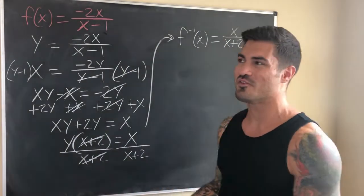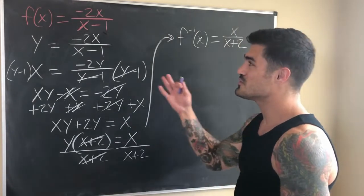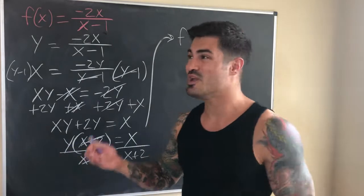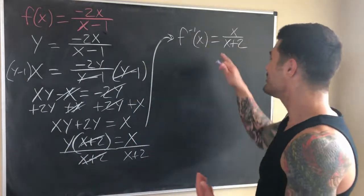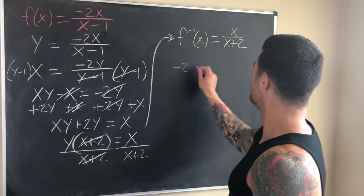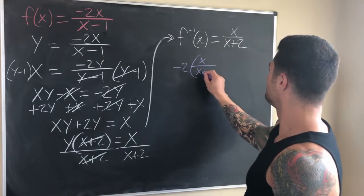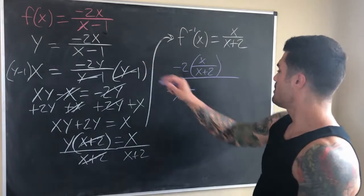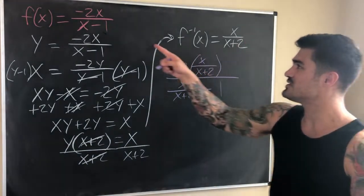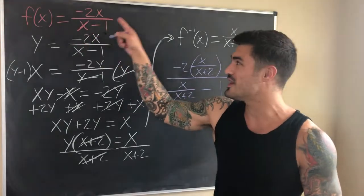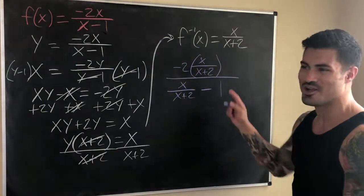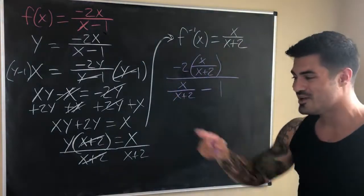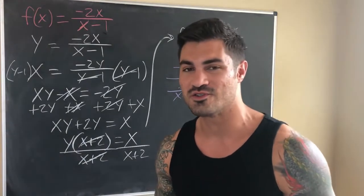Here's a fun — and also very tedious — exercise for the viewer: how can we confirm this answer is correct? If this truly is the inverse function, then when we form a composite function — plugging one function into the other — we should get out just x. So try plugging the inverse into the original: you get −2 times (x/(x+2)) over (x/(x+2)) minus 1. Do the algebra and prove that equals x. You can also do it the other way around. Let me know in the comments if you actually did it!